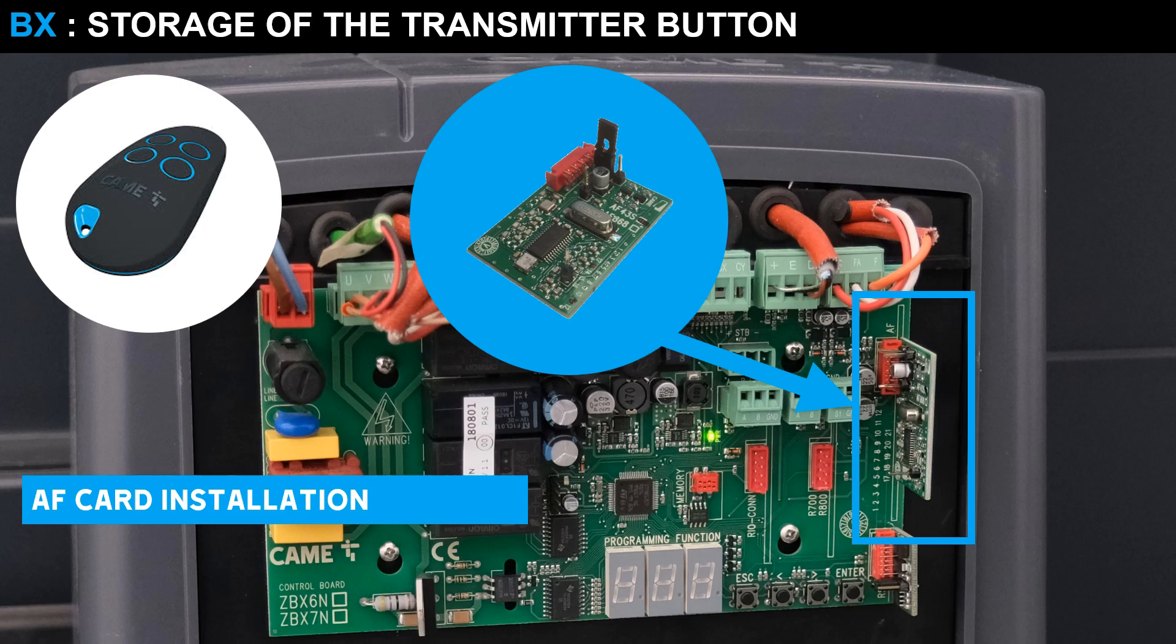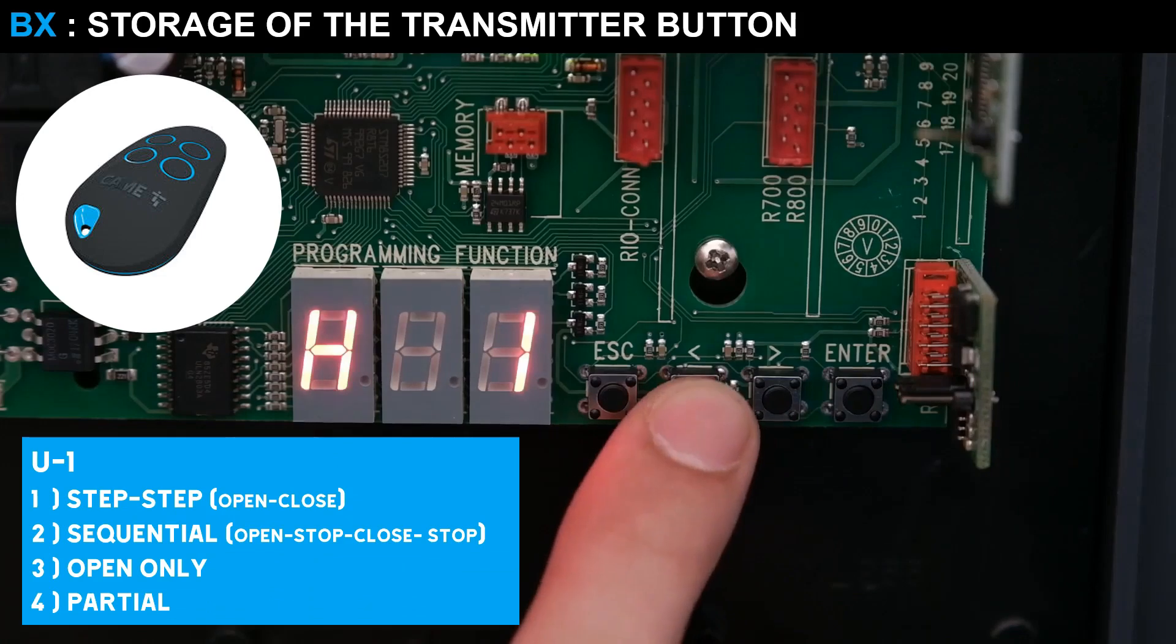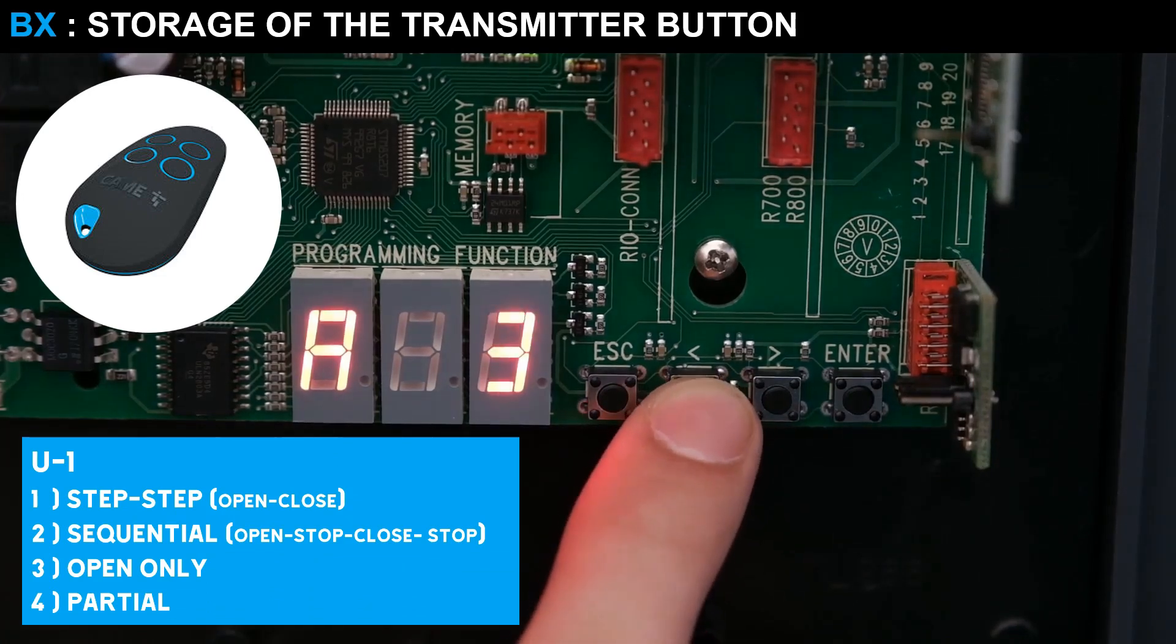To program a transmitter, it is necessary to install the AF board inside the control panel. Select function U1. Choose the function you want to assign to the user.